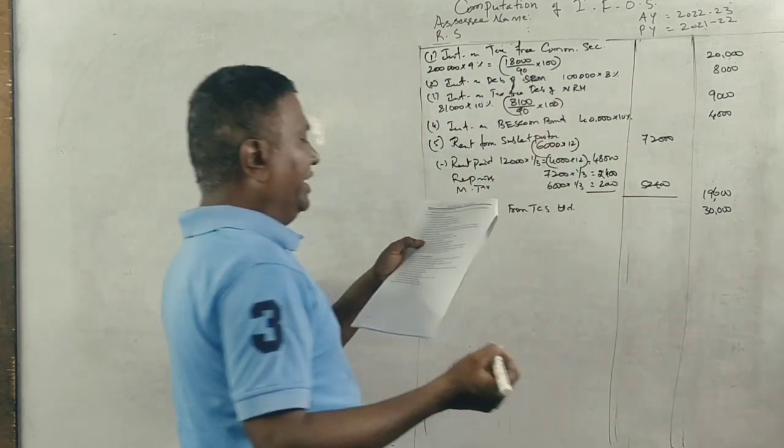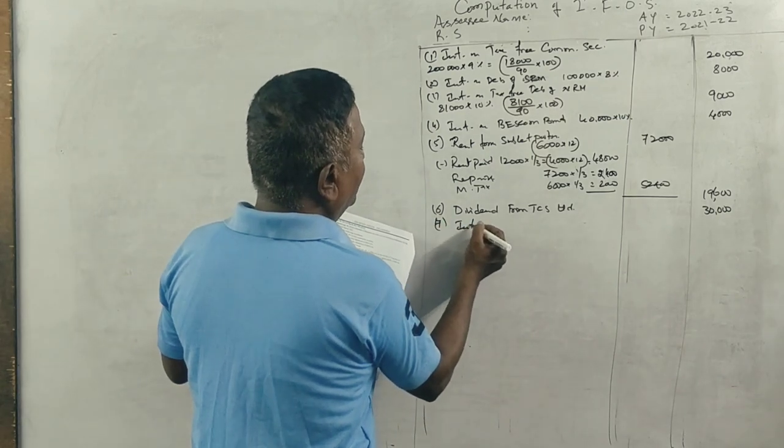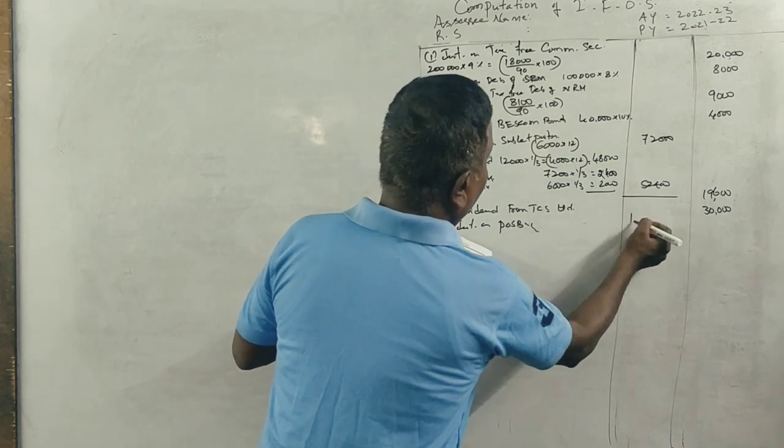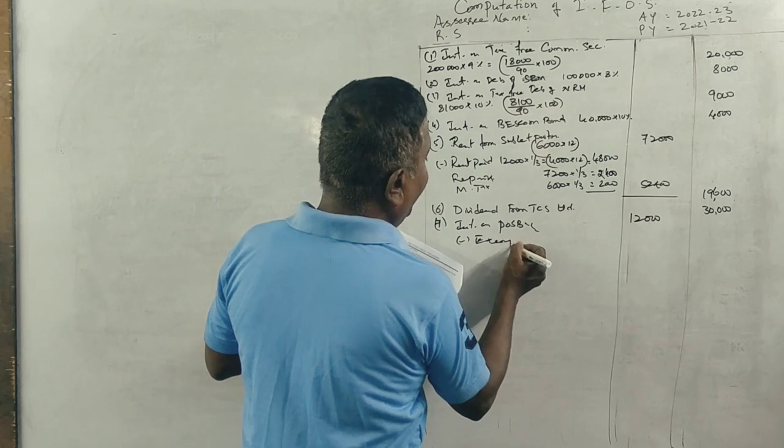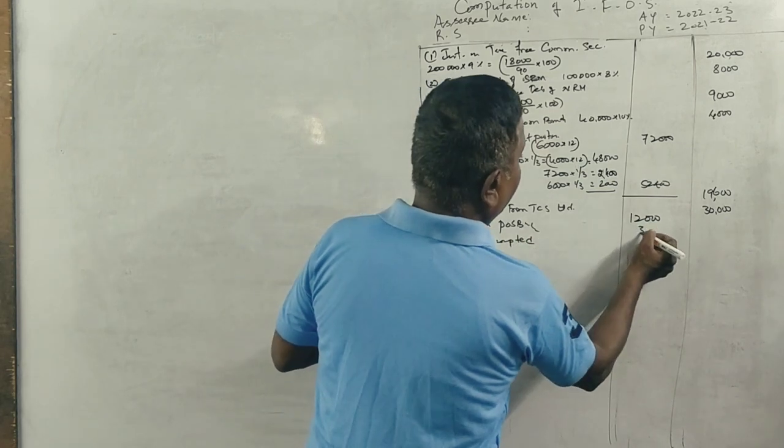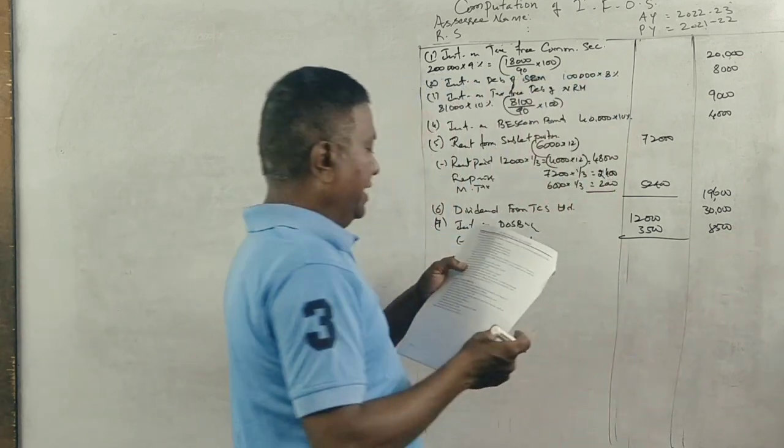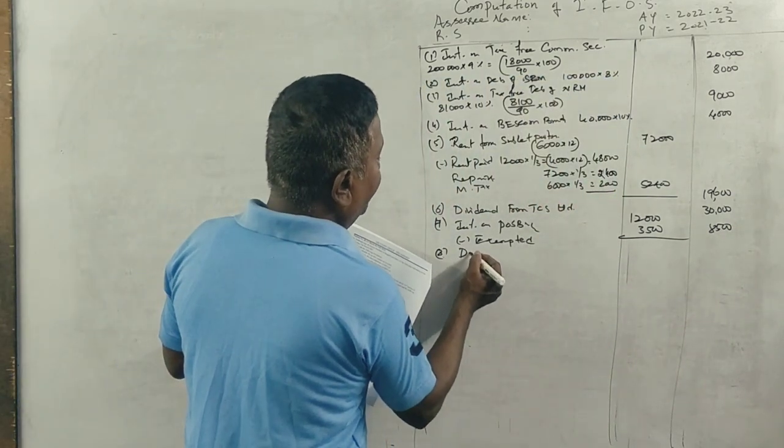Received interest on post office savings bank account, 12,000. How much is exempted? 3,500 is exempted, so 8,500 is taxable.